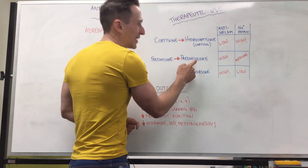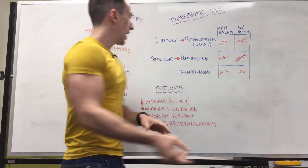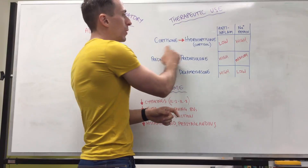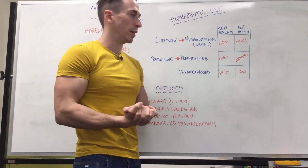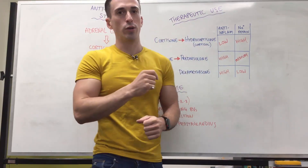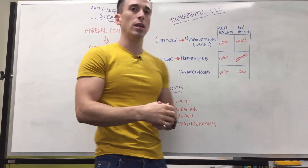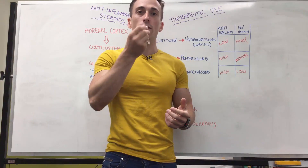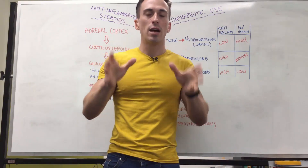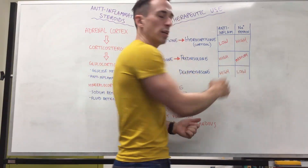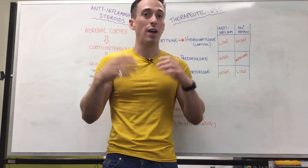If we look at prednisone and prednisolone, prednisolone is the active steroid and prednisone is not — just like we had with cortisone and hydrocortisone. Prednisone needs to be transformed into prednisolone by the liver. Prednisolone has a high anti-inflammatory property and a medium sodium retention property, and it is more systemically used — this can include oral ingestion or even IV. You may have some patients where you do not want sodium retention, such as those already having problems with fluid balance or kidney issues.